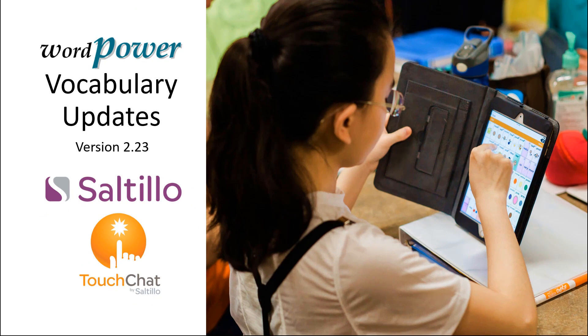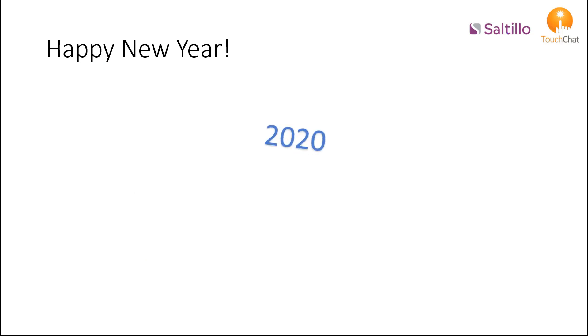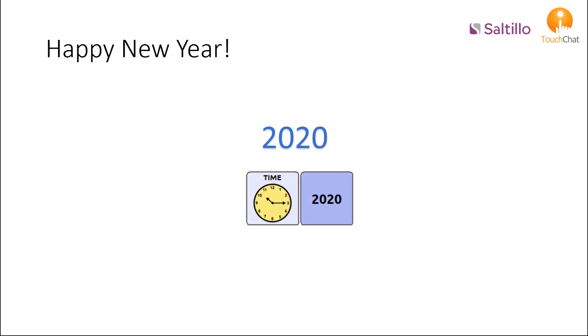WordPower offers a few updates. To begin, we'll say Happy New Year. The year 2020 is updated in all WordPower files within the Time category.